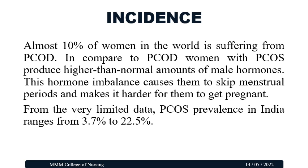Almost 10% of women in the world are suffering from PCOD. In comparison to PCOD, women with PCOS produce higher than normal amounts of male hormones. This hormone imbalance causes them to skip menstrual periods and makes it harder for them to get pregnant. PCOD is a slight, common disease, while PCOS is a more harmful disease. In India, PCOS prevalence ranges from 3.7% to 22.5%.